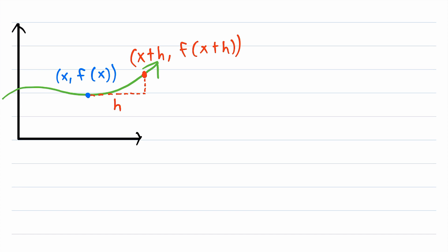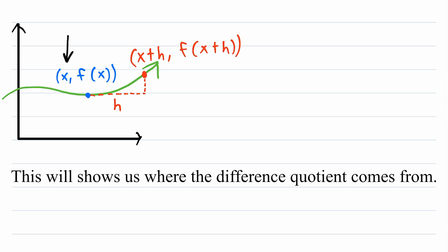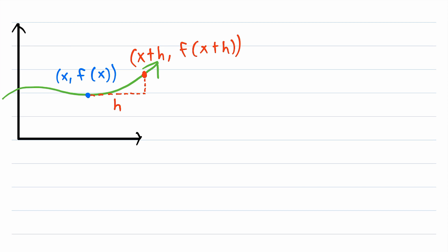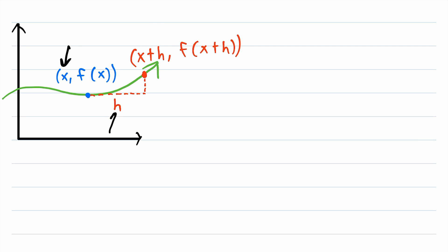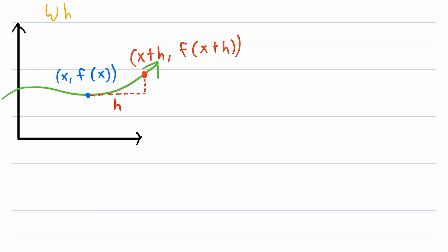Here we have a Cartesian plane and a sketch of just an arbitrary continuous function that we'll call f. We've labeled two arbitrary points on f. The first point gets a generic input value of x, so its output value is f of x. Then we're saying let's travel some arbitrary number of units h in the positive direction, and label that point. Since we traveled h units in the positive direction, this x-coordinate is going to be x plus h. Thus, the output value, or the y-coordinate, is f of x plus h. This is just a way to label two arbitrary points on our continuous function. Then we ask: what is the average rate of change between the two points?